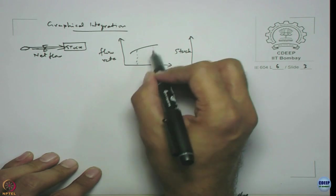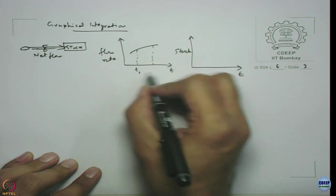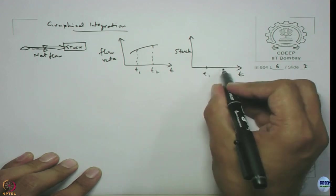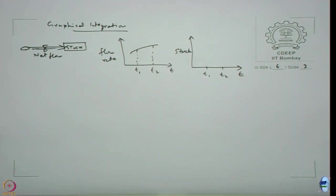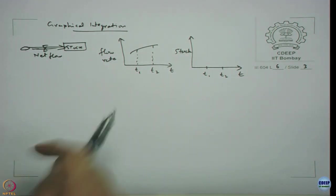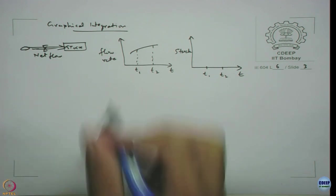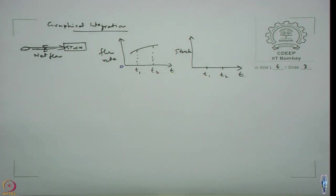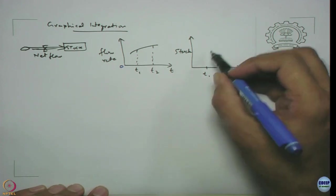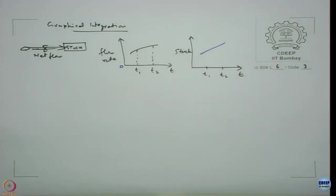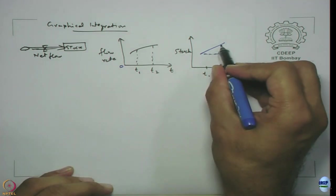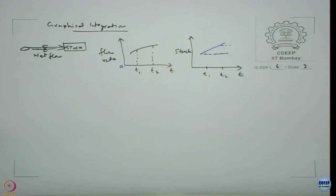From time T1 to T2, we want to figure out how the stock changes. The flow rate is positive — let us take zero as the baseline. So we expect the stock is going to increase. How much will the quantum of increase be? Let us not worry about the shape for now. What should be the quantum of increase? The change should be the area under the curve.